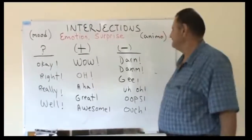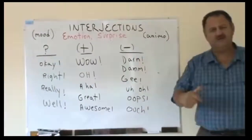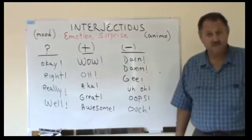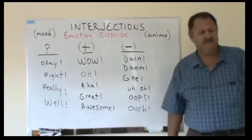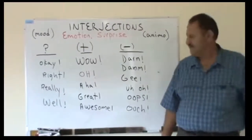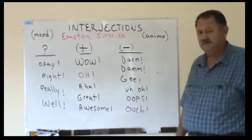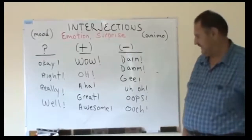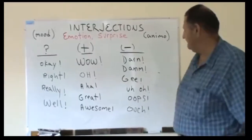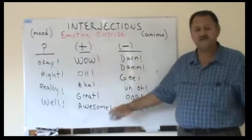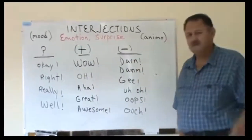We have negative interjections: 'darn, I lost the game' — perdí el juego. 'Damn, I lost the game.' 'Gee, I lost the game.' 'Uh-oh, I lost the game.' 'Oops.' 'Ouch' — right, something hurt. These are examples of negative interjections.